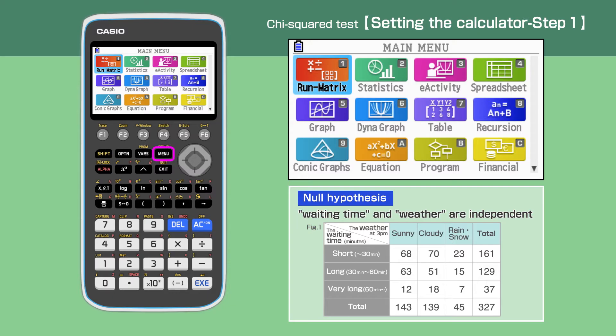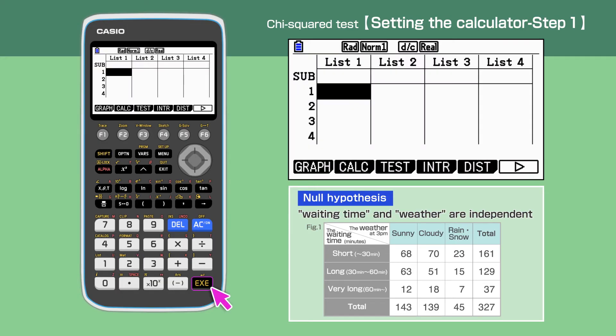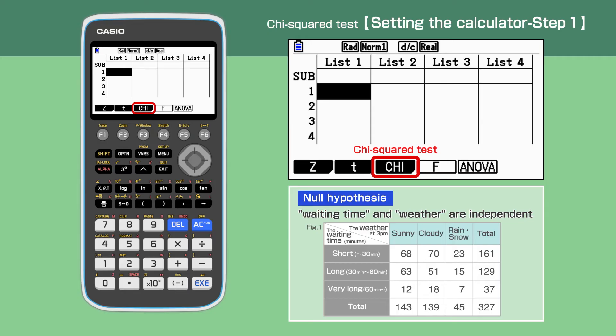Press the menu button to open the main menu, then move the cursor or press 2 to choose the statistics function. Press F3 for test, then F3 again to select the Chi-Squared test.